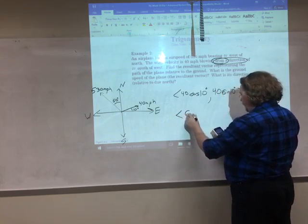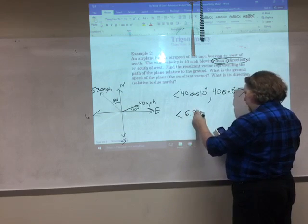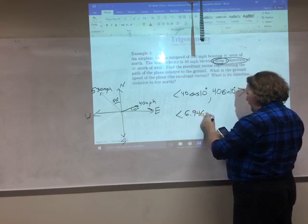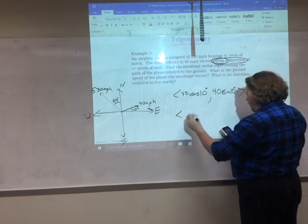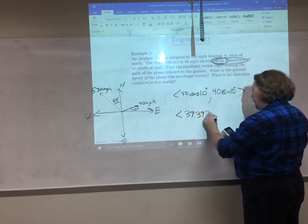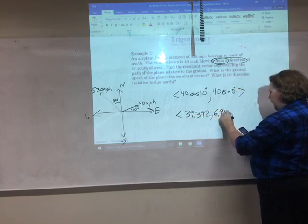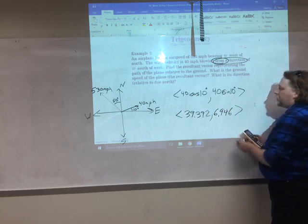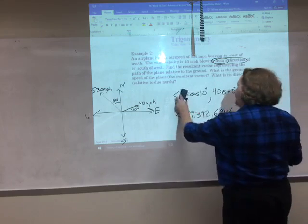And so from the wind, I get the x component is 6.946. And the y component, oh, I wrote that backwards. Look at that. The x component is 39.392. The y component is 6.946. So that's the wind. Now we need to look at the plane itself.